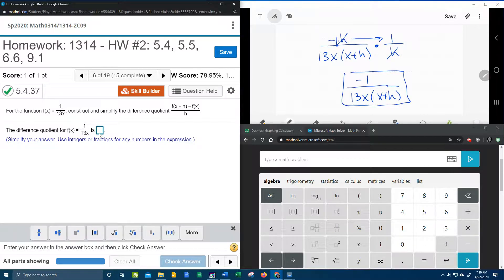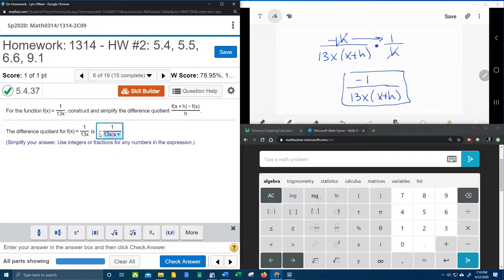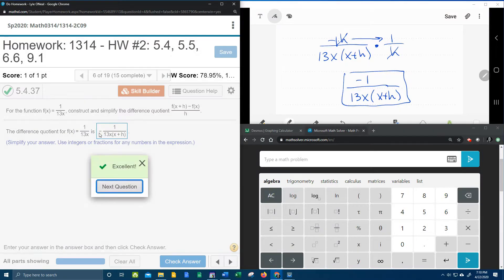Let's plug it in and see if we're right. Negative 1 over 13x times x plus h, enter. There you go.